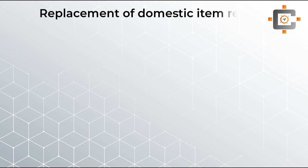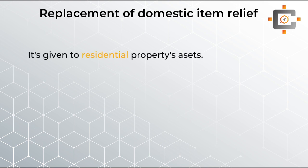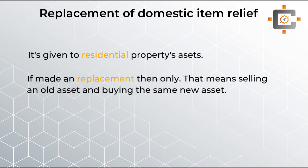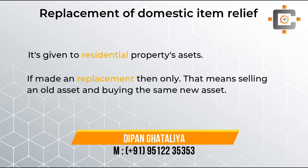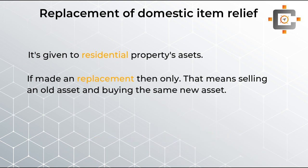Now let's come to the replacement relief. This is a straightforward concept. Residential property owners can claim this relief when they sell an old asset — such as a fridge, refrigerator, AC, TV, or furniture — and purchase a new one as a replacement. Two conditions apply: first, it must be a residential property; second, there must be an actual replacement of the asset. Replacement relief is not given on simply buying a new asset — it requires disposal of the old asset and then buying the new asset.